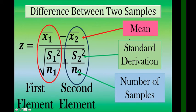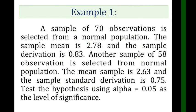X̄ means the sample mean, s means standard deviation, and n is the number of samples. To understand it better, let's have an example.